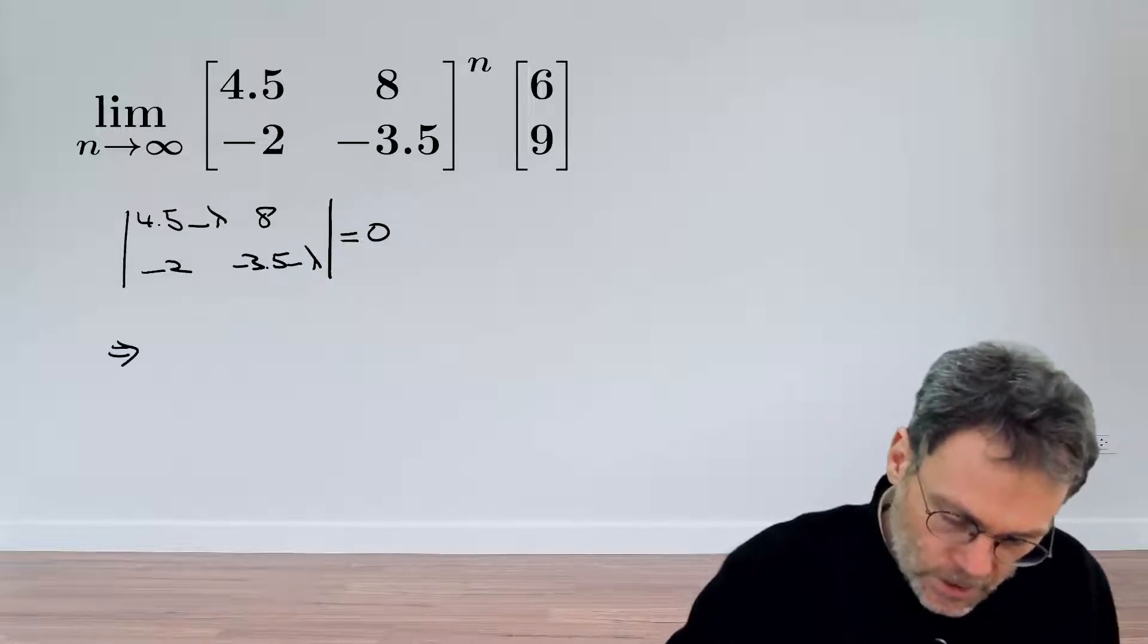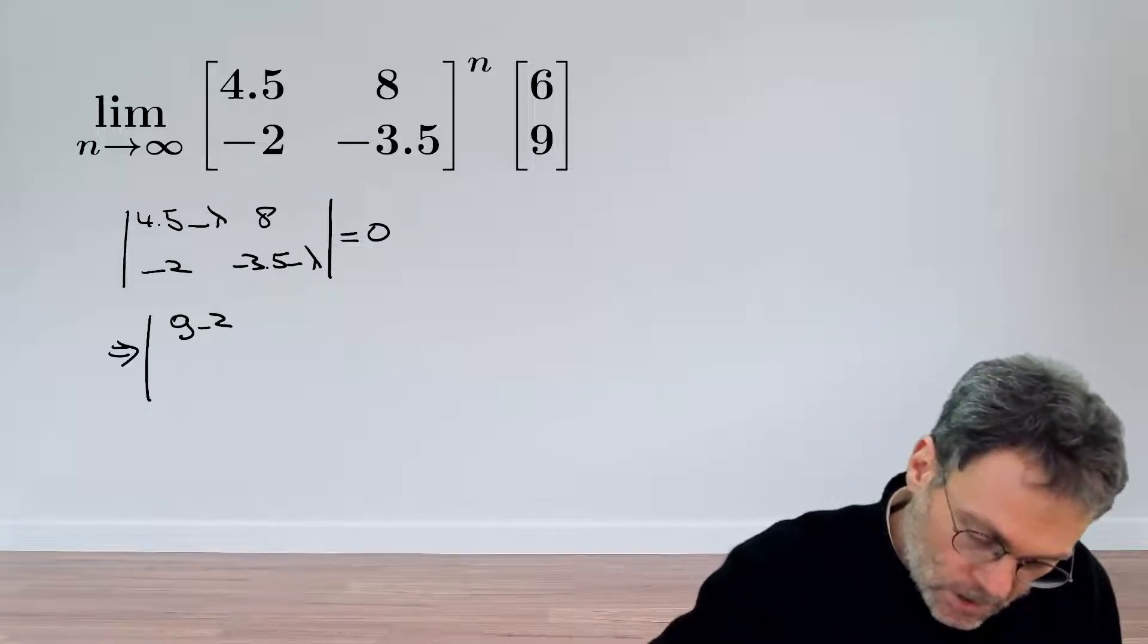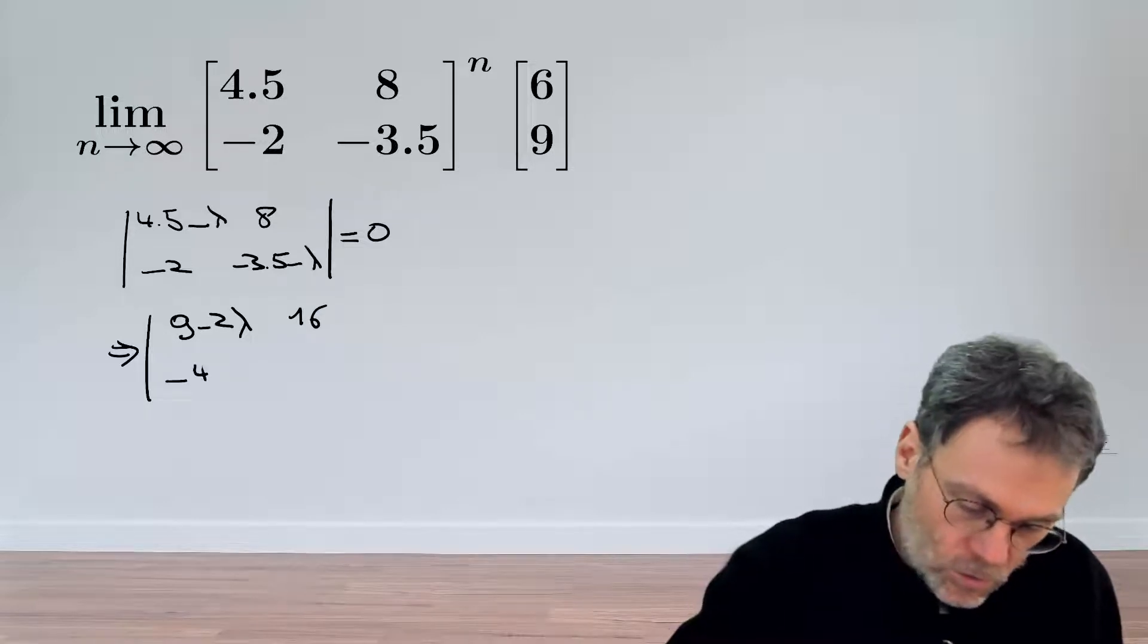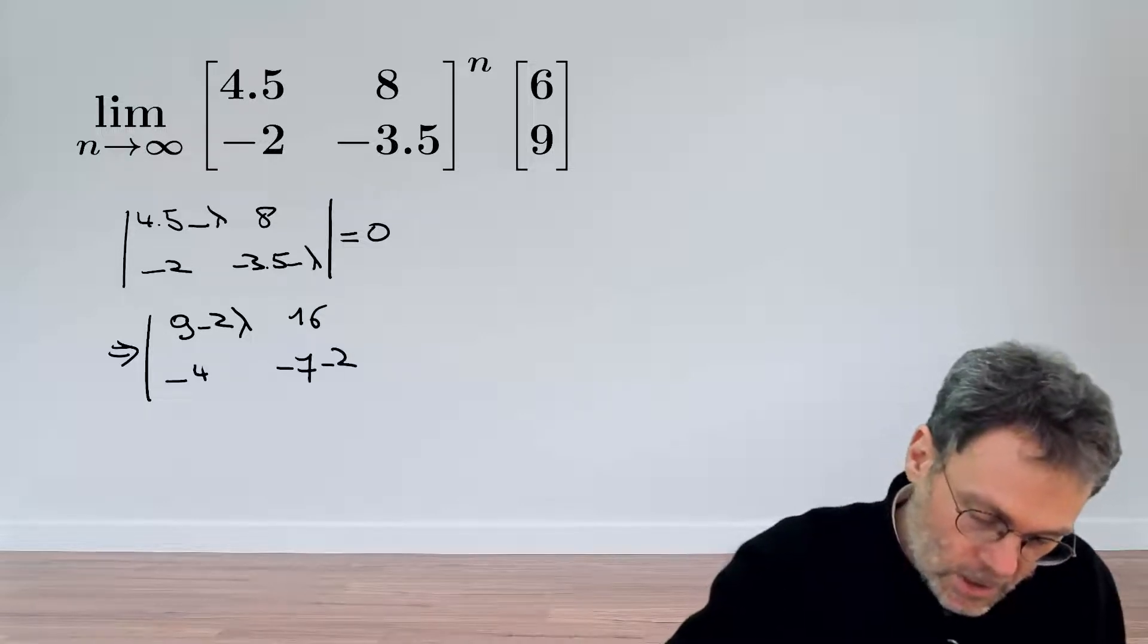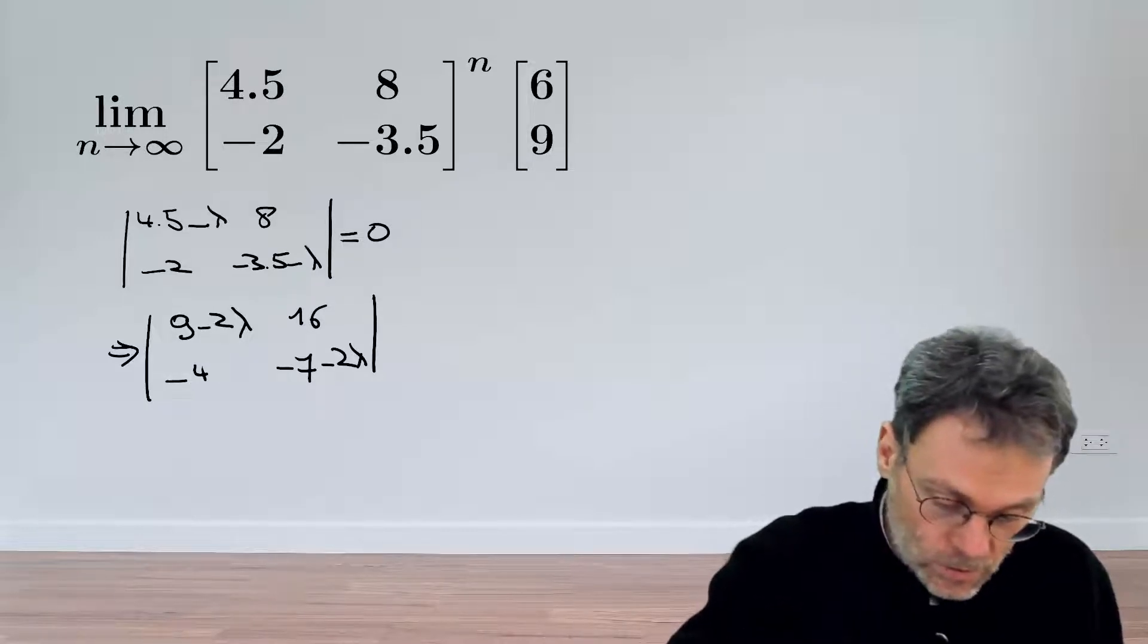Now to make our life a little bit easier, we're going to multiply everything by 2 so that we can get rid of these pesky decimals here. So this becomes 16, that's minus 4, minus 7 minus 2λ, and this thing should be equal to 0.